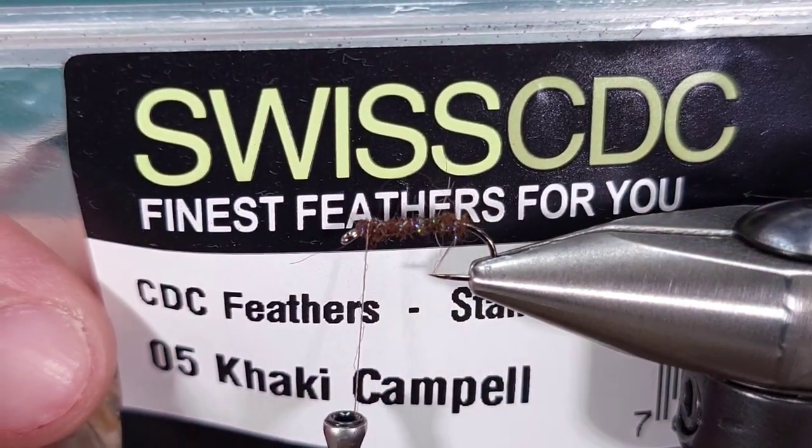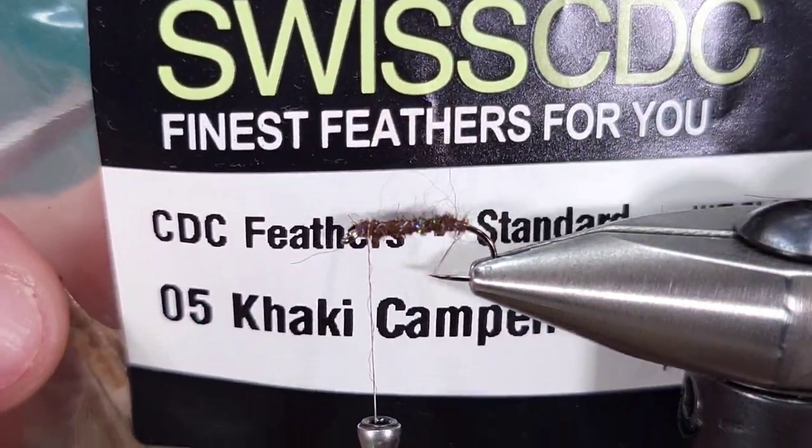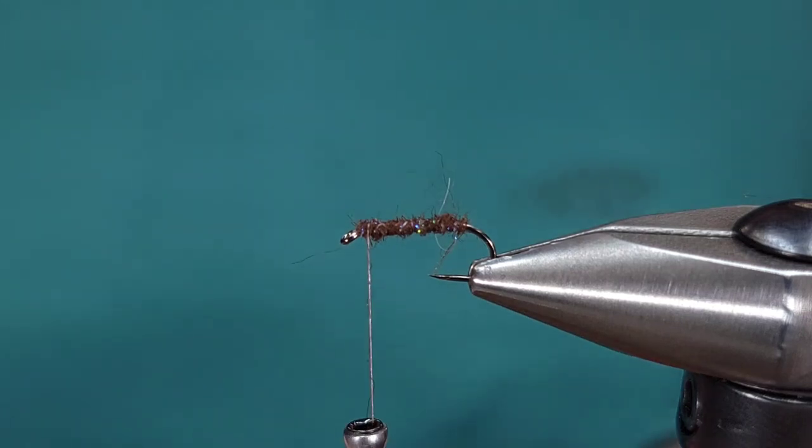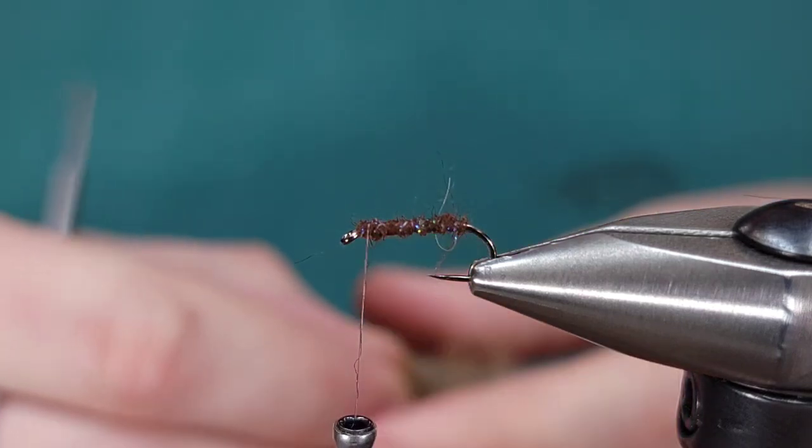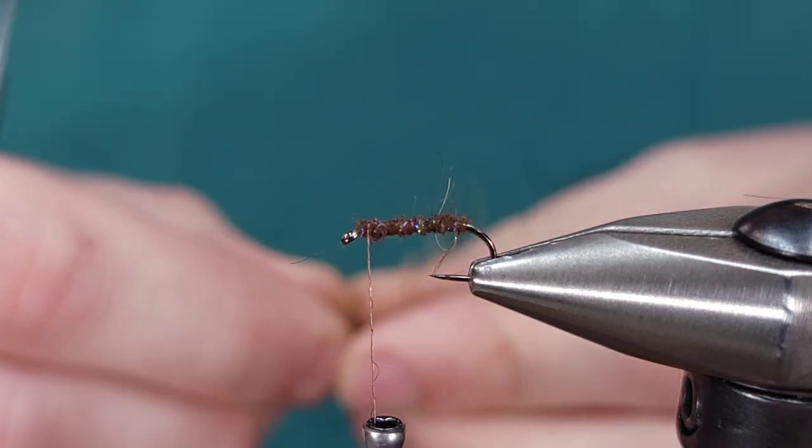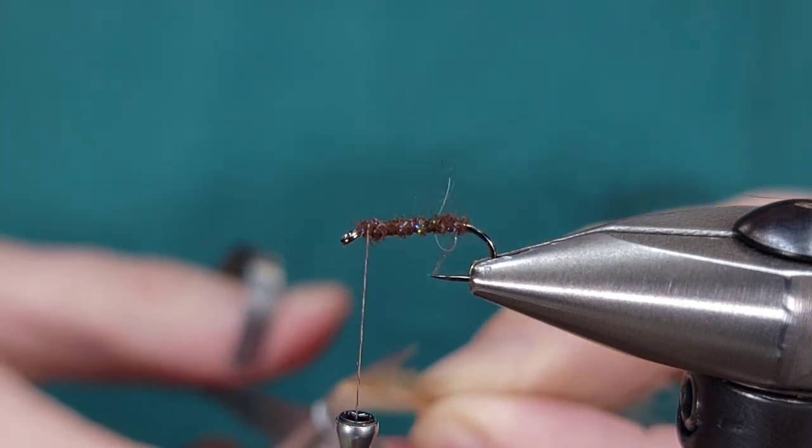For the wing I'm using CDC here, Swiss CDC in Khaki Campbell, but natural or dun, whatever you have is fine and will work just as well.